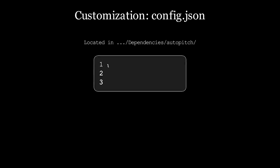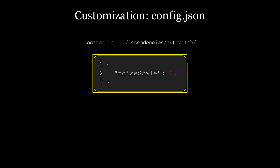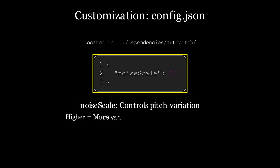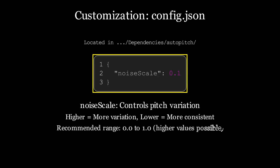In the AutoPitch folder, you can find config.json. By changing the parameter Noise Scale there, pitch bends will be more and more different each generation.